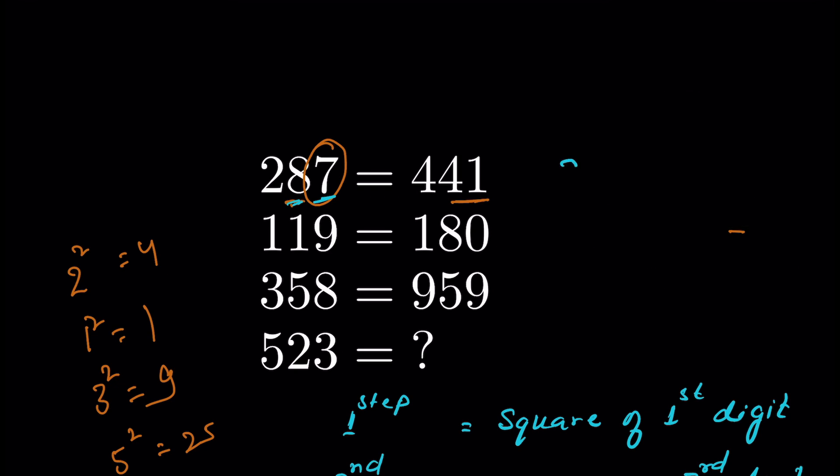In the first number, this is how it is working: square of first digit, then we have square of third digit, that is 7 squared minus the second digit. So this gives us 441.